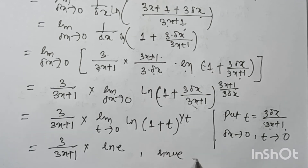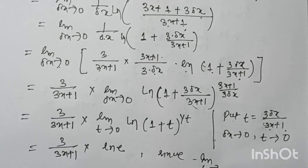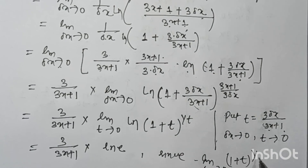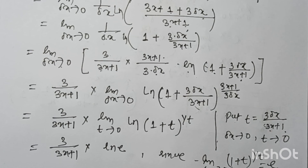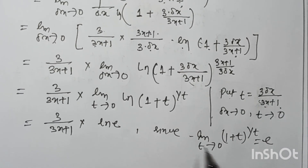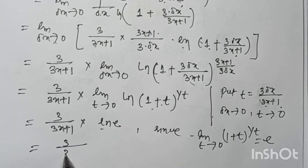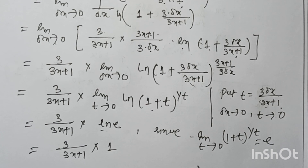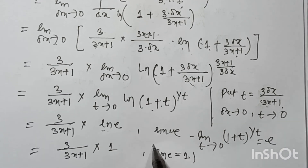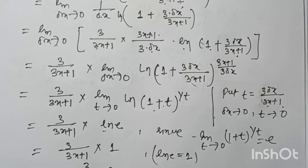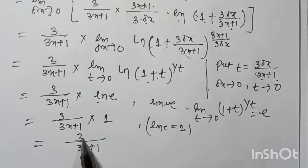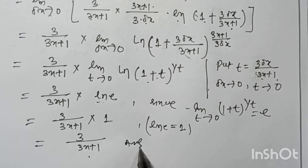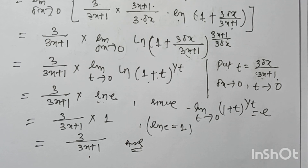Since the standard limit gives: limit as t tends to 0 of (1 + t)^(1/t) = e, we apply this formula. Therefore ln(e) = 1, and the final answer is dy/dx = 3/(3x + 1). Thank you for watching my channel — do like, share, and subscribe.